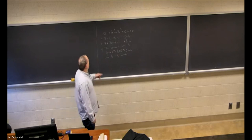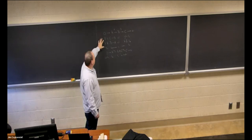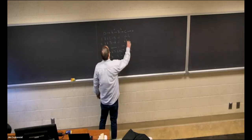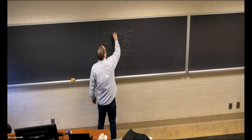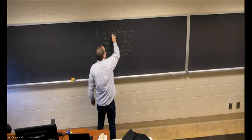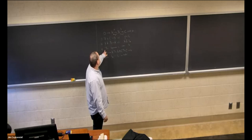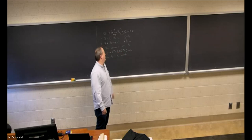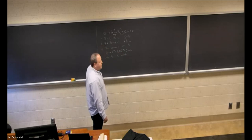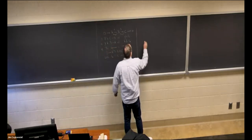Last time we were talking about split exact sequences. We have three equivalent conditions: there exists h: C → B such that g∘h is the identity on C; there exists a map from B to A such that the composition is the identity on A; and finally, the sequence is isomorphic to the obvious split exact sequence. Last time we showed (1) implies (2) and (2) implies (3), so let's finish this off.